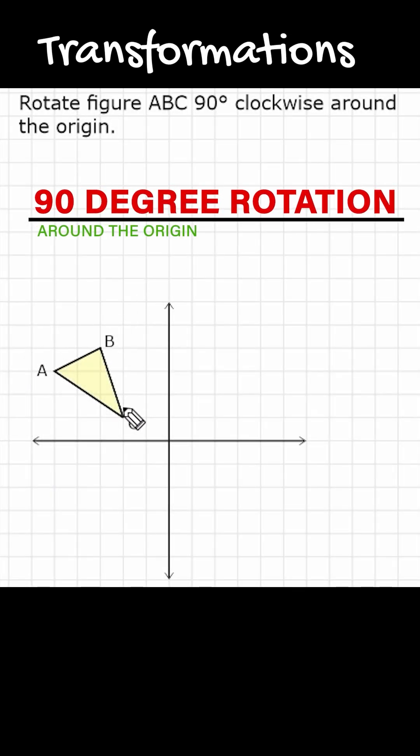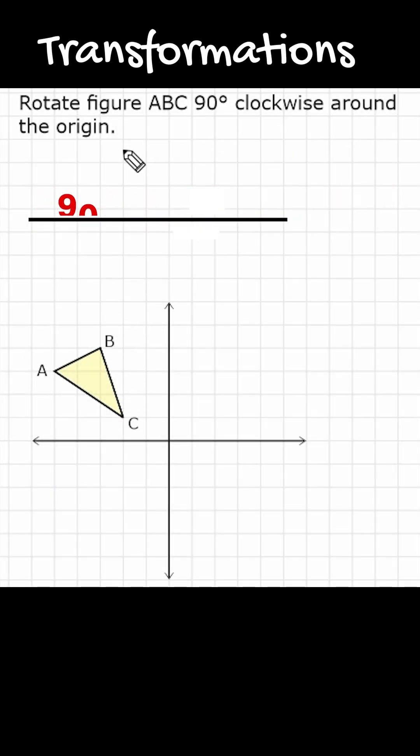All right, so we have to rotate figure ABC 90 degrees clockwise around the origin. So the origin is where the X and the Y axis intersect, and a clockwise rotation is going to go in this direction.